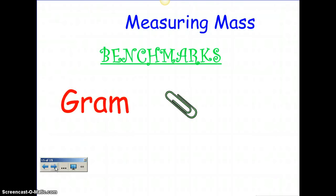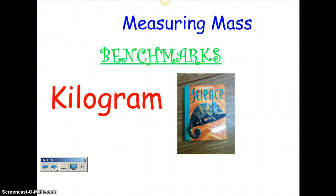Let's talk about measuring mass. A metric unit for measuring mass would be the gram. A gram is about as light as a paper clip. A kilogram is about the weight of a textbook, like our science or math textbook. So a gram is something really small and a kilogram is a little bit bigger. There are 1,000 milligrams in a gram, and there are 1,000 grams in a kilogram.